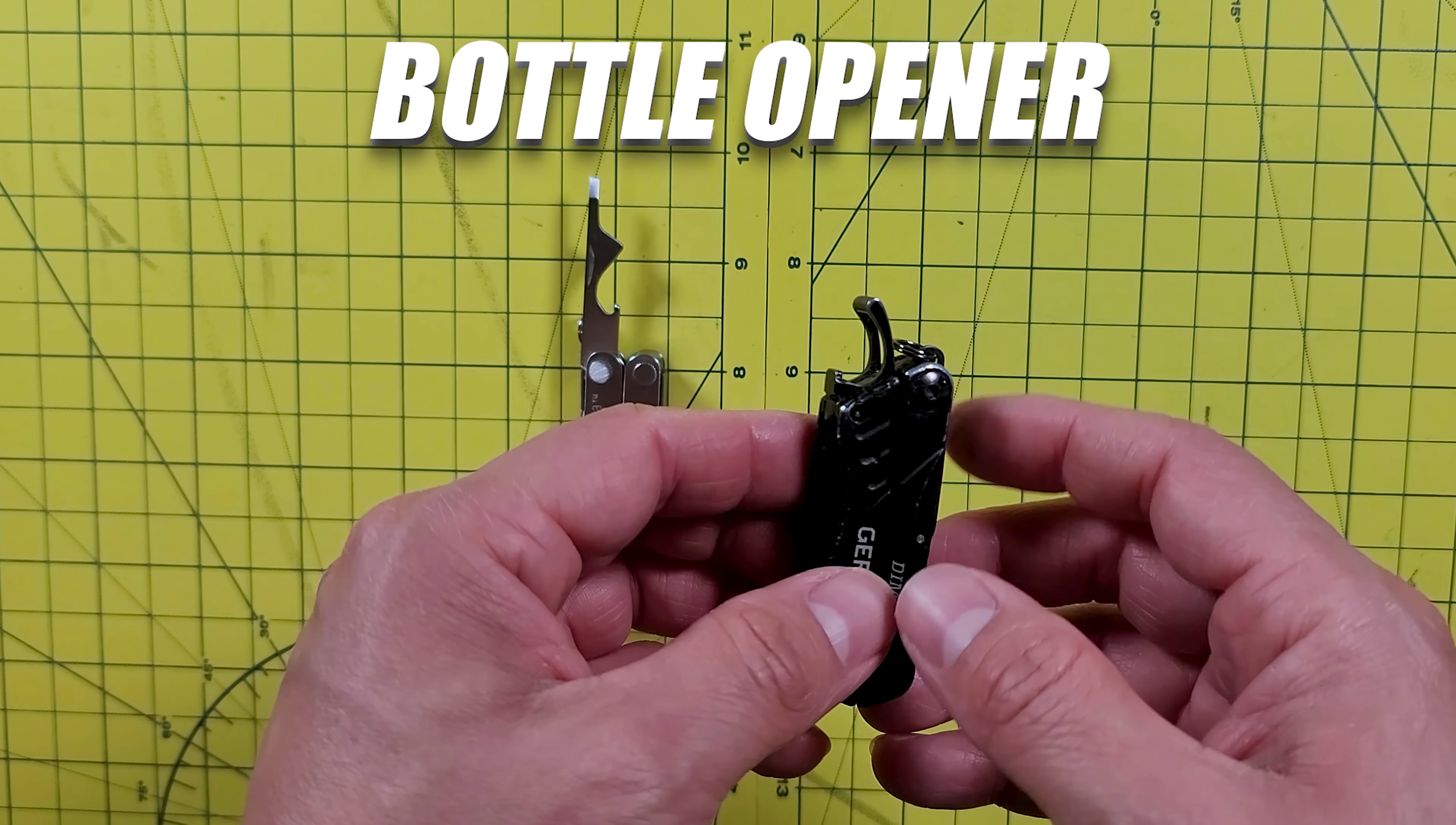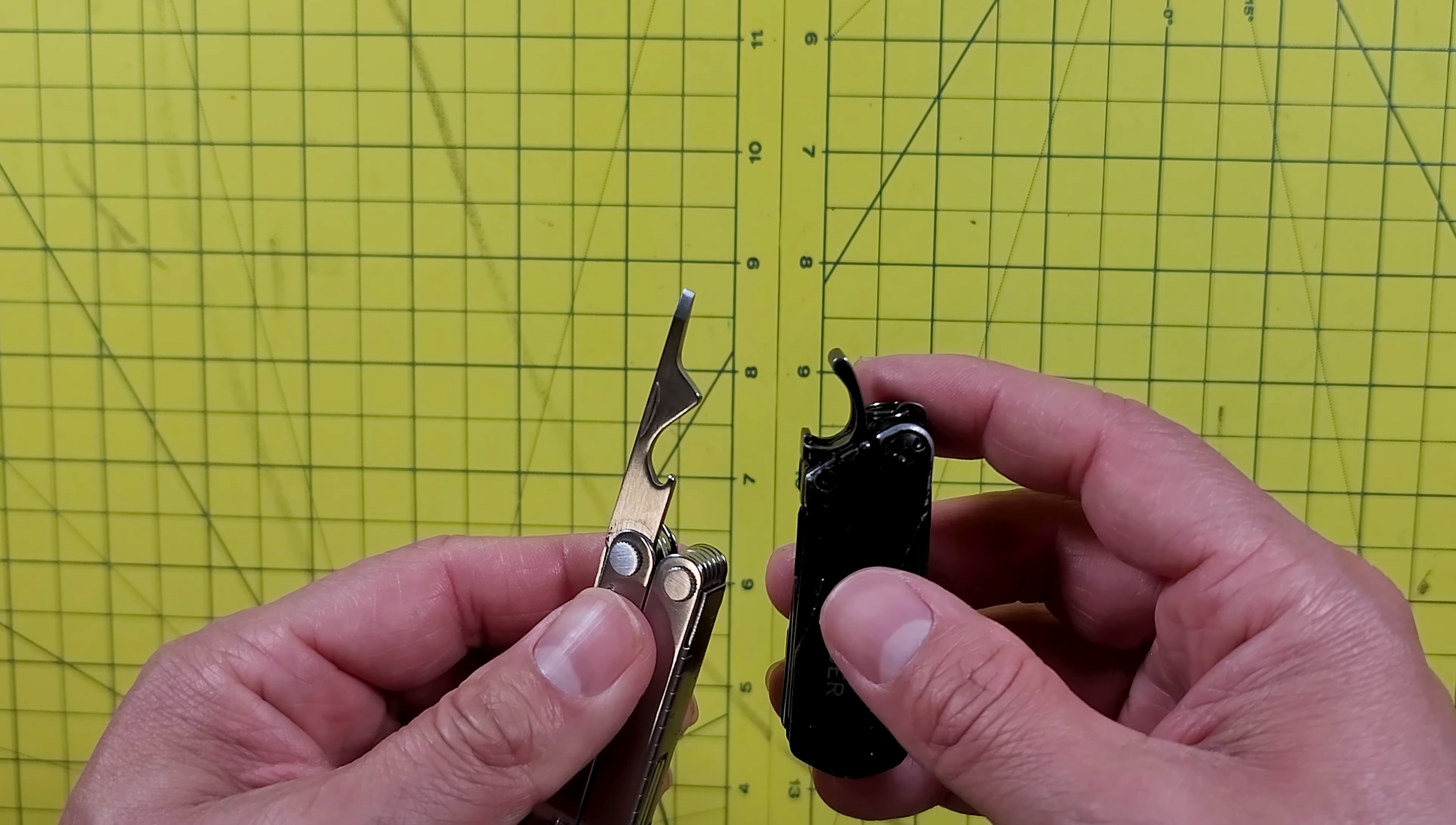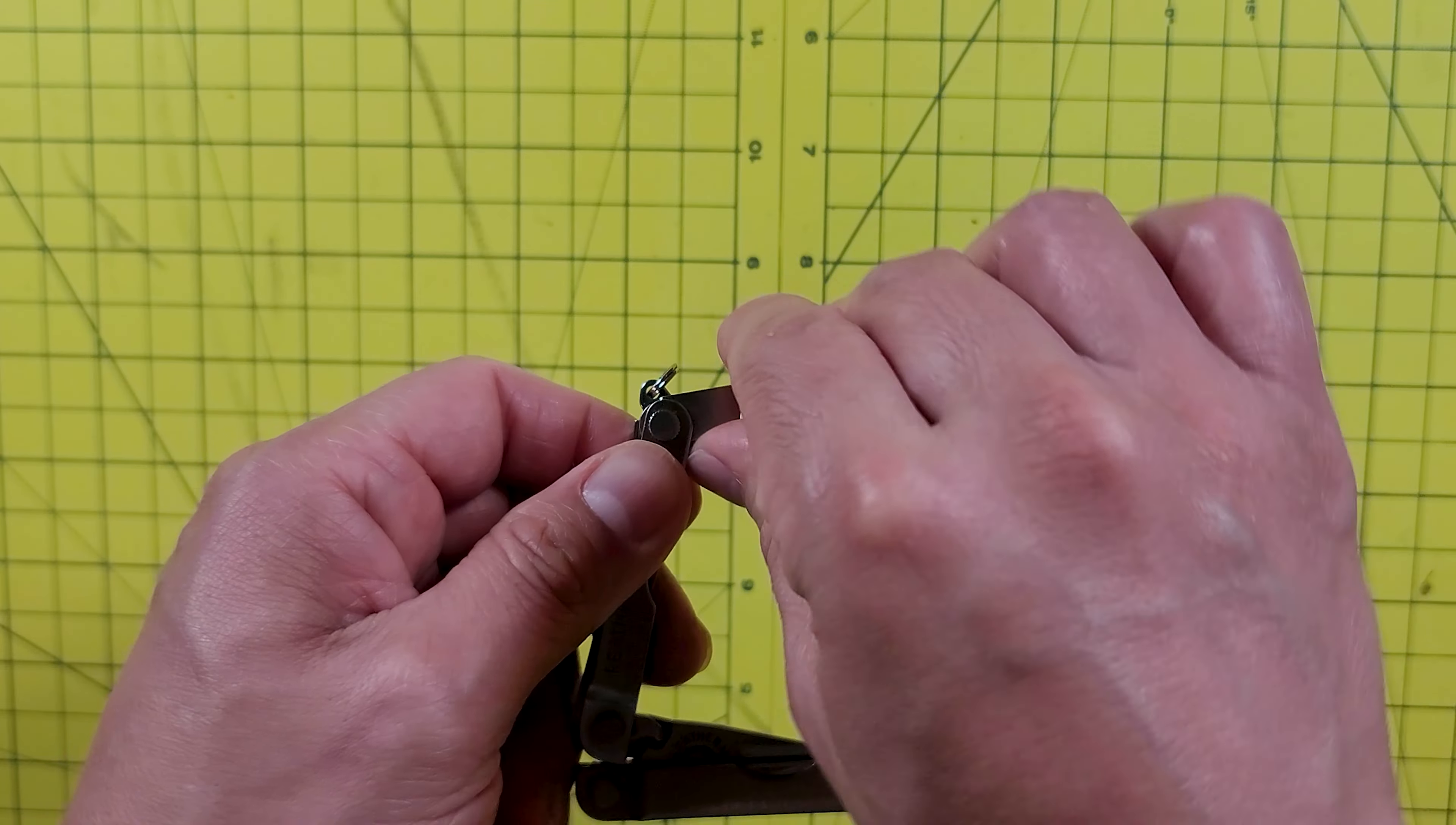Next you have the bottle opener. The one on the Dime is on the exterior of the tool. That's a great benefit just because of the quick and easy access, unlike the case of the Micro where you have to open the tool to get to the bottle opener. It only takes a few more seconds to get to the opener, but if you have the bottle in one hand, then you have to put it down to use both hands to take out the bottle opener on the Micro. Whereas in the case of the Dime, it's already available on the exterior. No need to put down the bottle to get to the opener. So the Dime's bottle opener takes the win in this category.